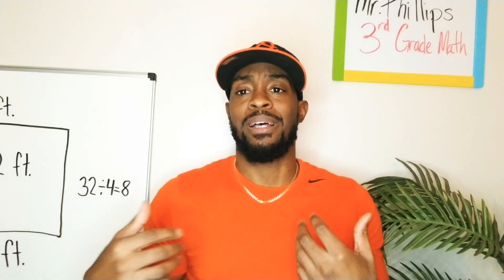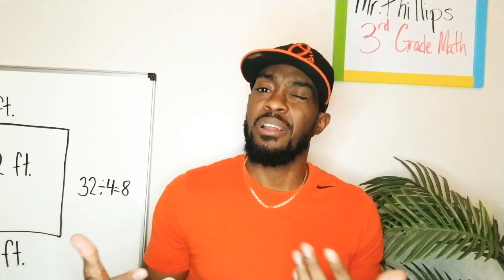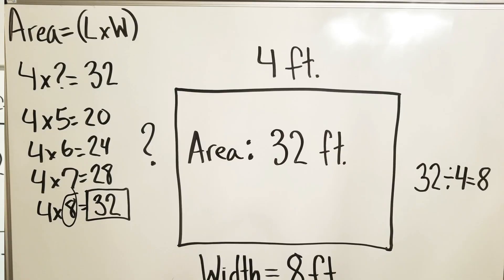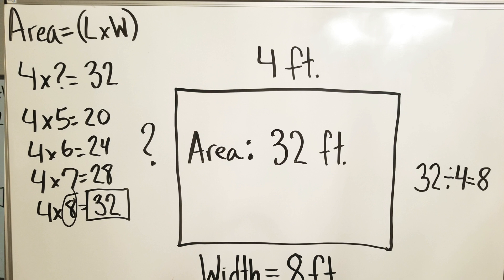I also did something else myself — just another way to solve the problem on my whiteboard over here. So what we have here is I drew my box. I have the area is 32 feet, I have the side they gave us which is four feet, and I also wrote what our friends had: 32 divided by four equals eight.